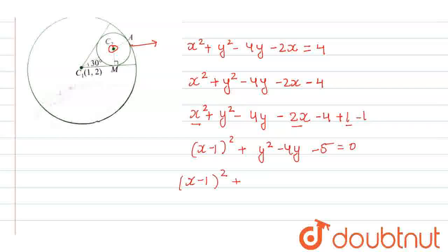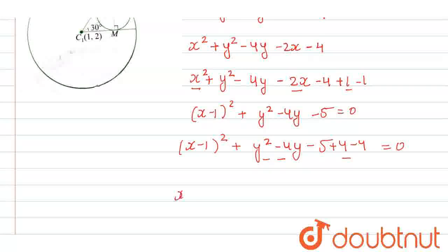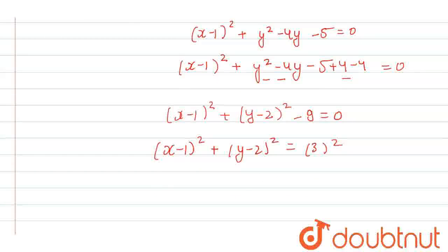From here we get x minus 1 whole square plus y² - 4y. Now, we will add 4 and subtract 4, so this value will become y minus 2 whole square. So, from here we get x minus 1 whole square plus y minus 2 whole square equals -5 and -4, which becomes -9. We can write 9 as 3 square, so the center coordinates are (1, 2) and the radius is 3.